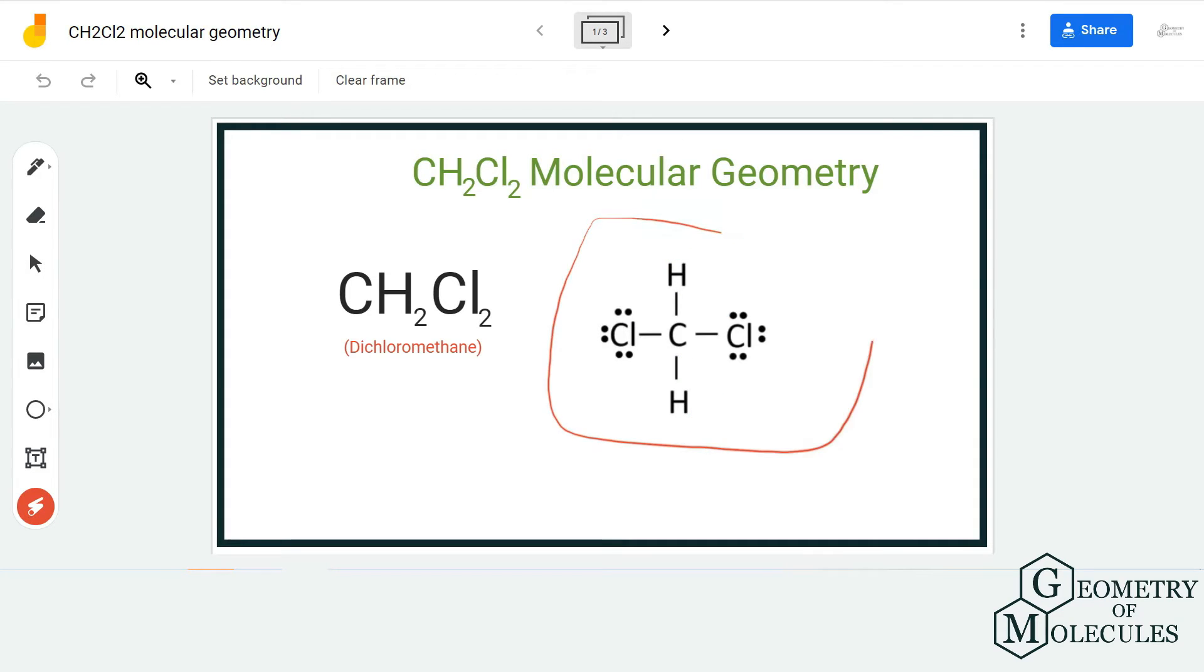To understand its molecular geometry, we are first going to look at its Lewis structure. This is the Lewis structure of the molecule in which the carbon atom is in the center, forming two bonds with chlorine atoms and two bonds with hydrogen atoms.